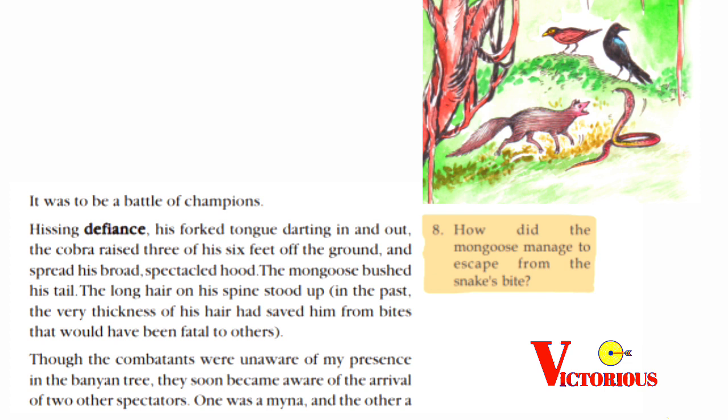It was to be a battle of champions. Hissing defiance, his forked tongue darting in and out, the cobra raised three of his six feet off the ground and spread his broad spectacled hood. The mongoose bushed his tail; the long hair on his spine stood up. In the past, the very thickness of his hair had saved him from bites that would have been fatal to others. Though the combatants were unaware of my presence in the banyan tree, they soon became aware of the arrival of two other spectators.